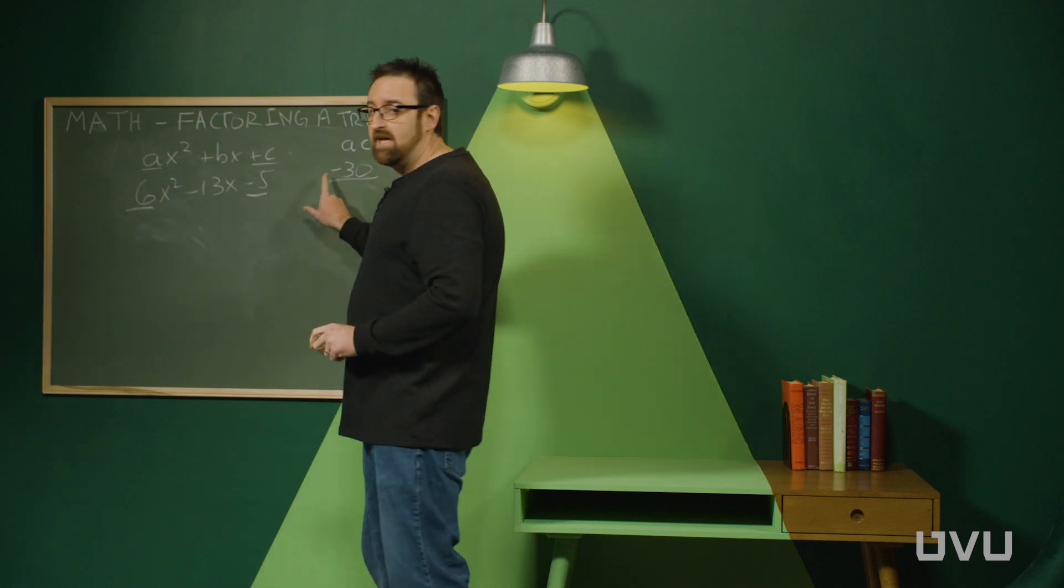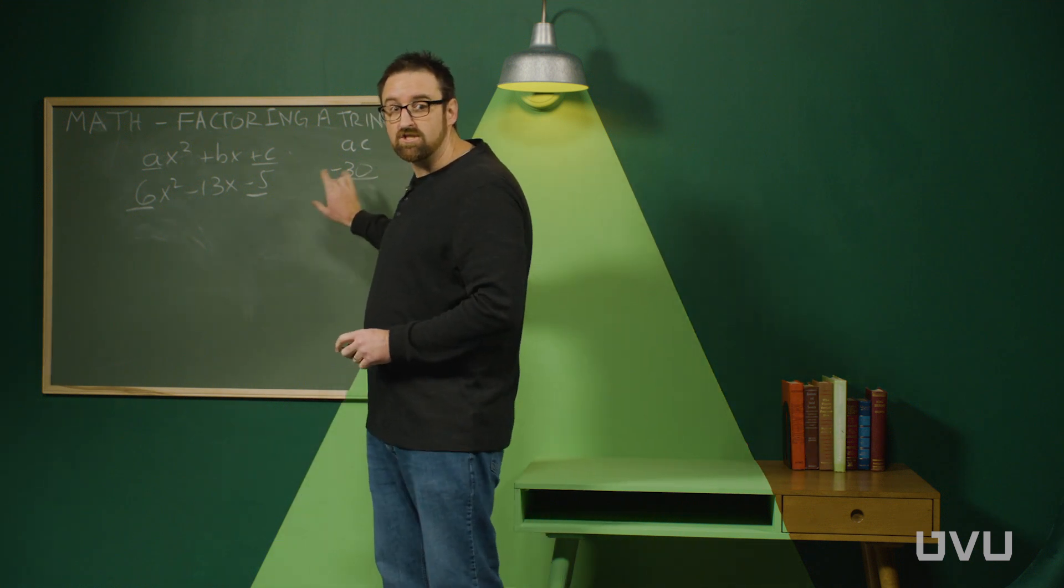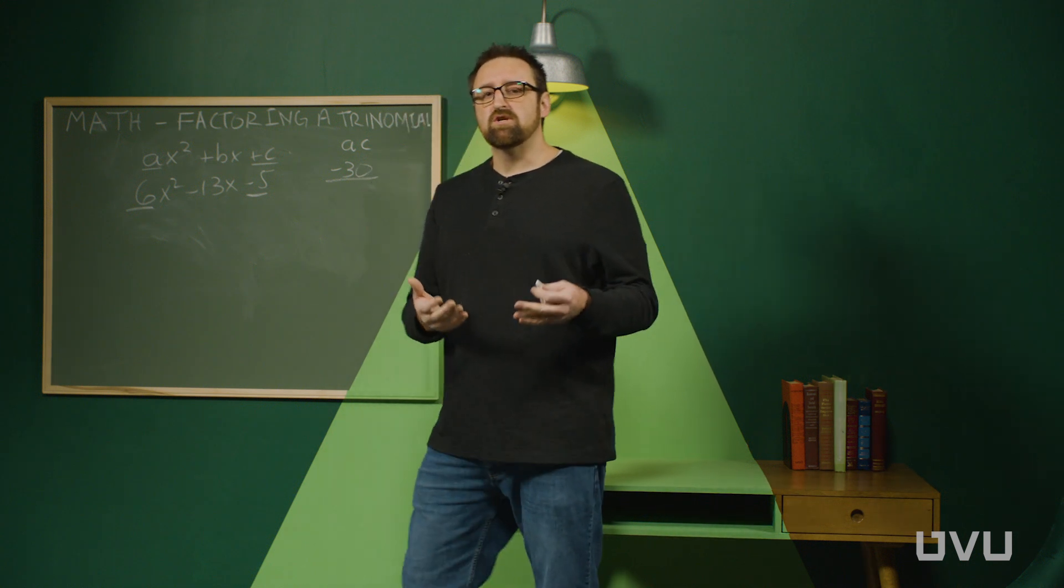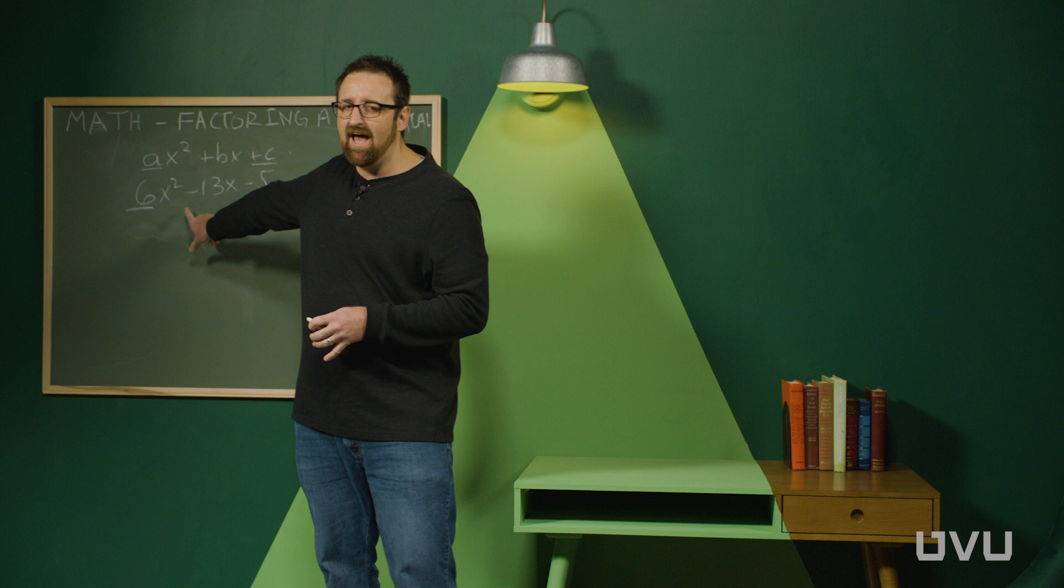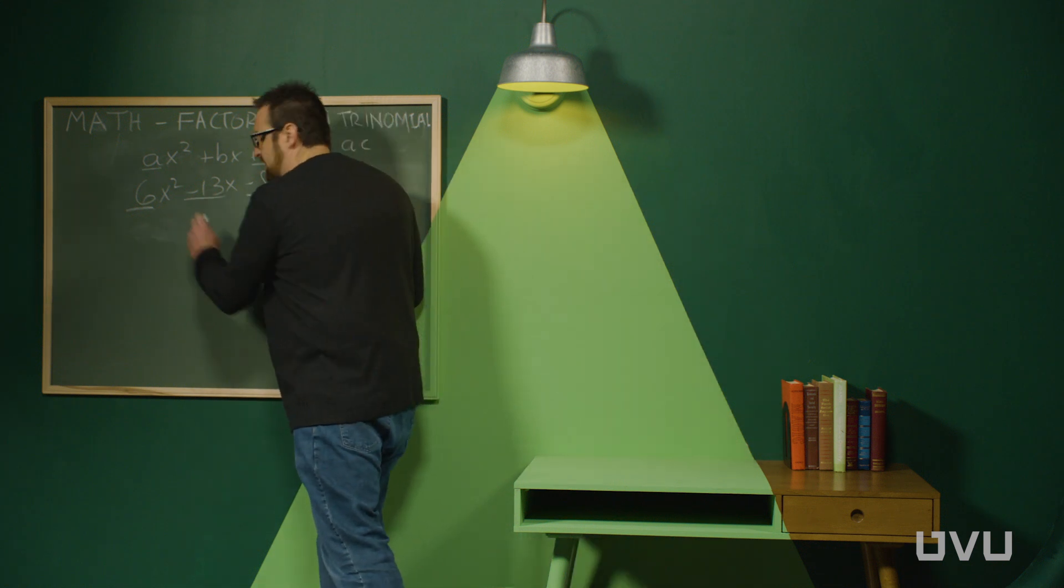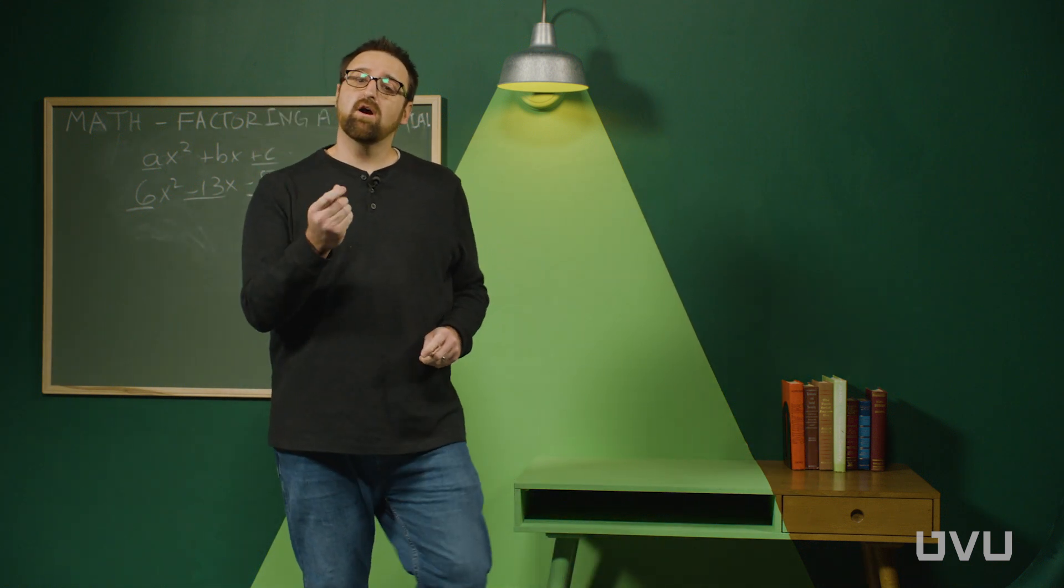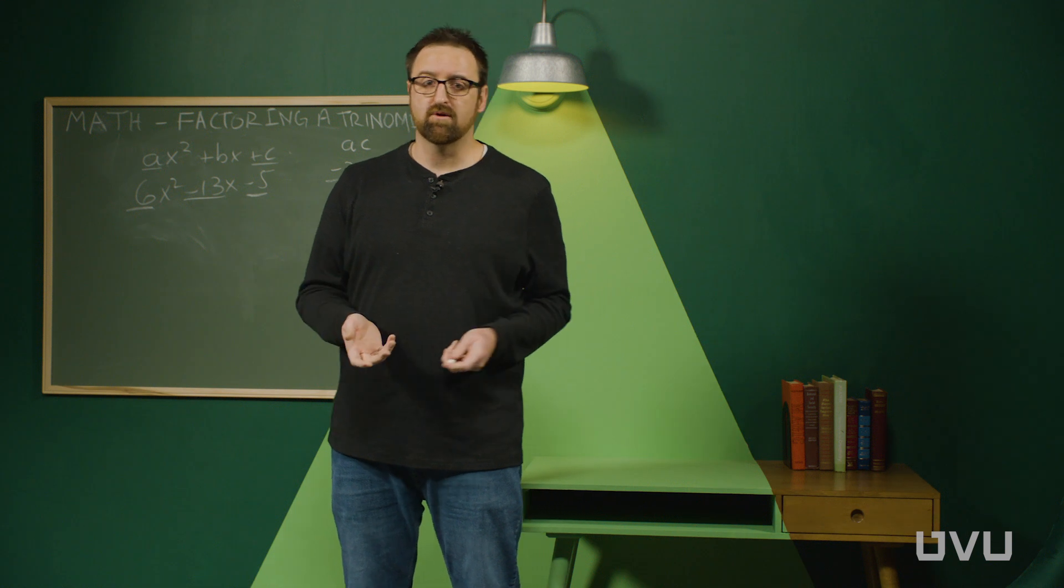For a minute, we're not going to worry about the sign. We're just going to think about the number 30. What we need to do is we need to find a pair of factors that multiply to negative 30 but add to this middle number, the negative 13. So to start, we need factor pairs of the number 30.